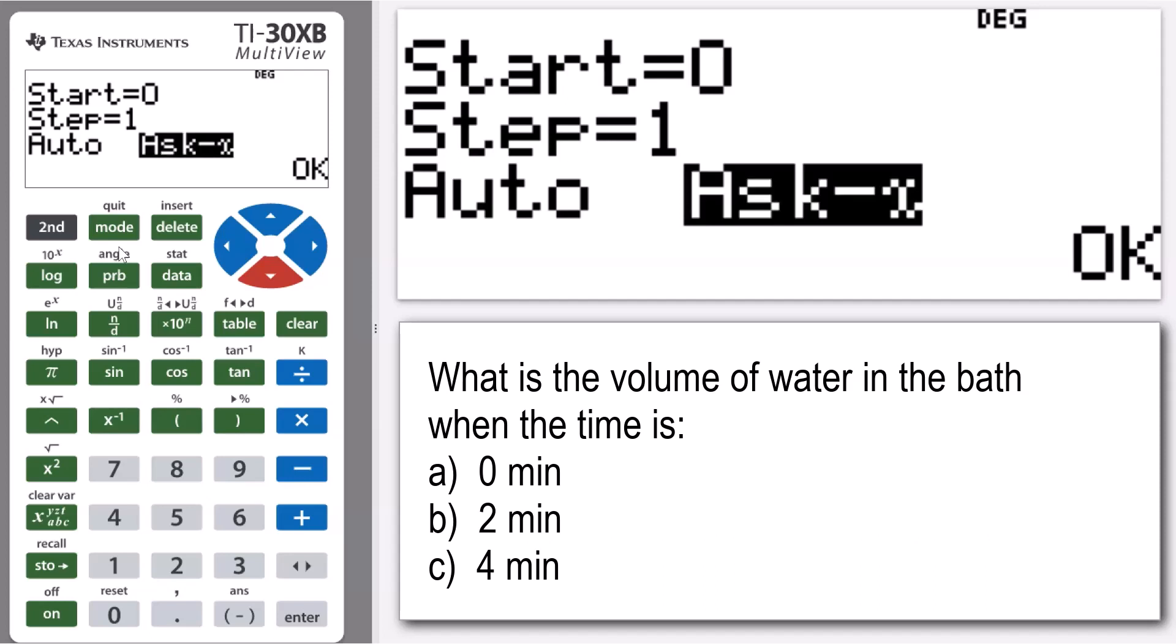And that's because the times that I'm interested in are not sequential times. Okay, so zero, two, and four minutes, and I'm not actually interested in any of the other times. So by using the Ask X, I can just specifically ask for those three values and not get my whole table of values. Okay, so I'm going to press okay.